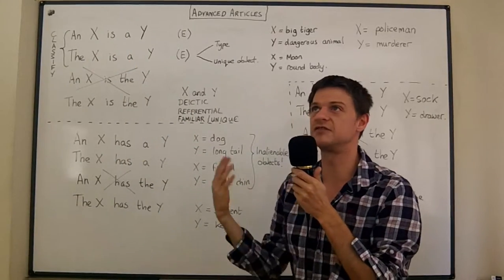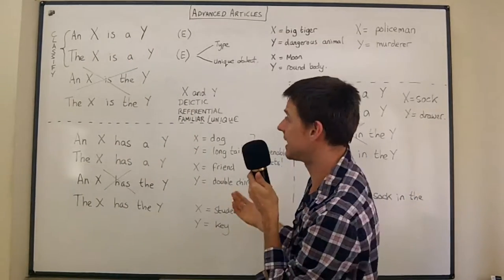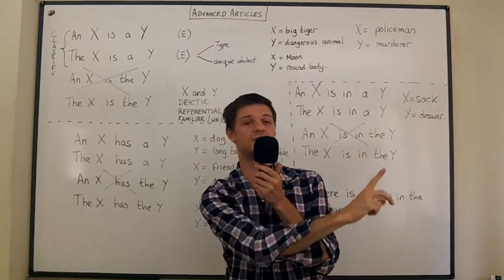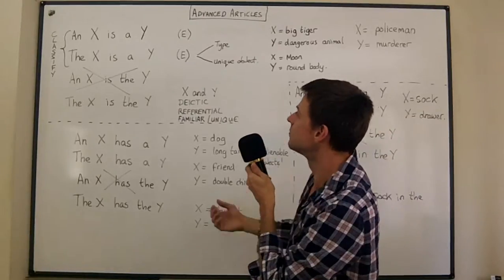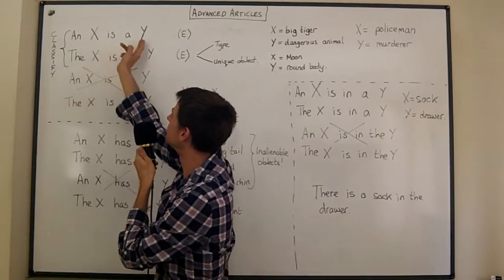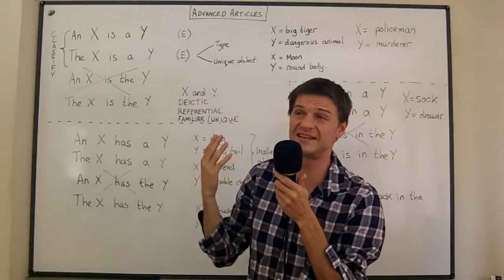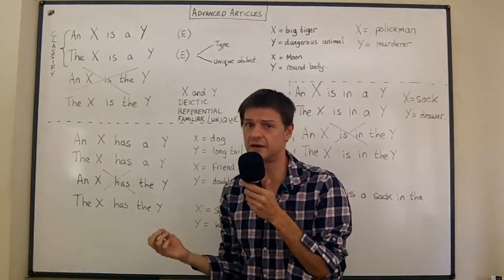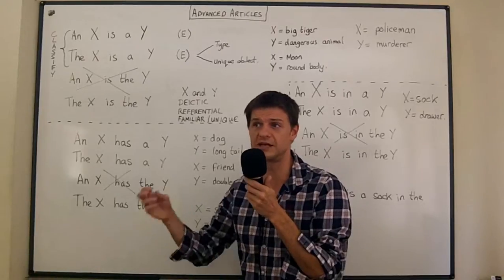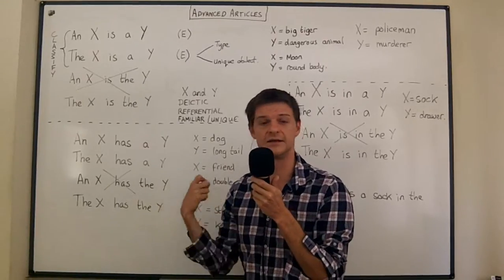So a moon is a round body. We would use this to describe any moon. Not the moon which comes up every night in our sky but any moon - Jupiter's moon, Saturn's moons. We're saying that any moon is a round body. Basically this is the kind of sentence you might see in a dictionary or something like that. A moon is a round body which orbits a planet.